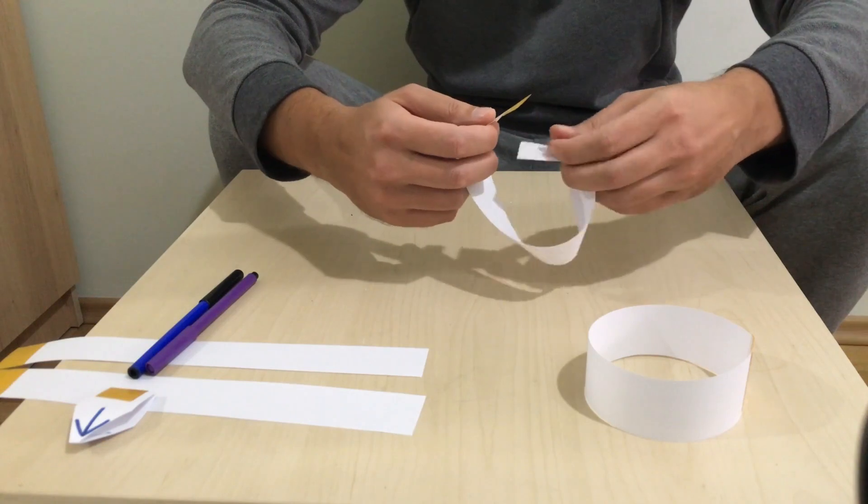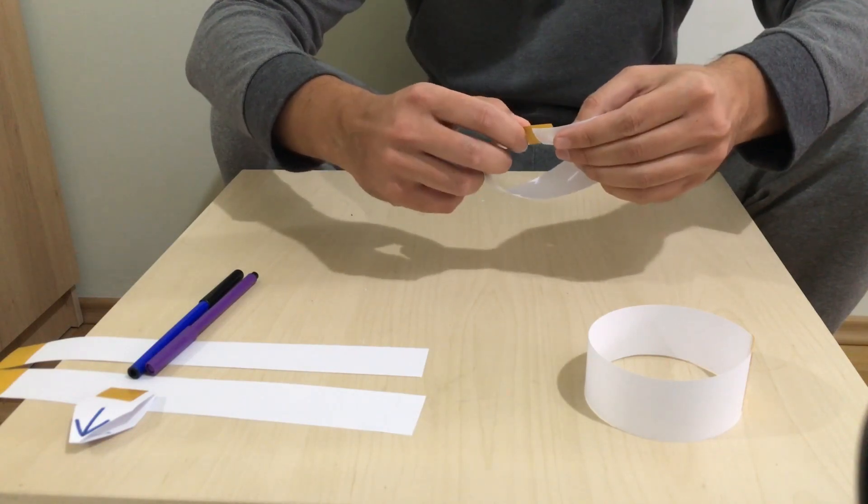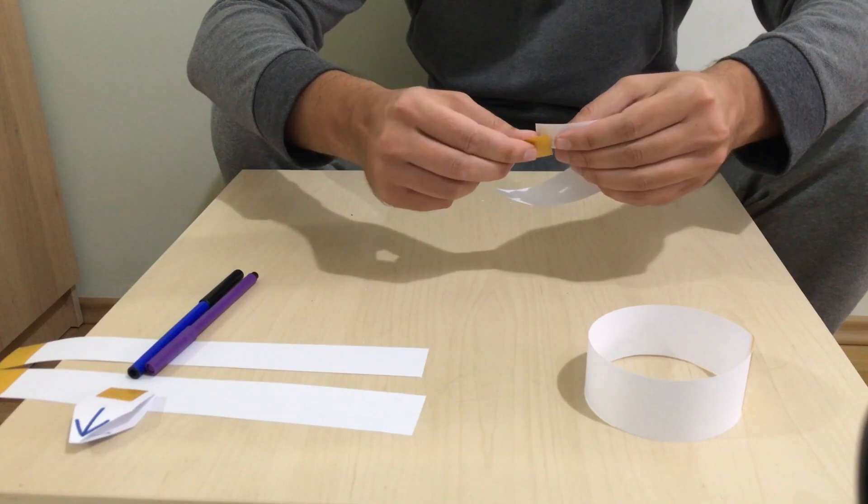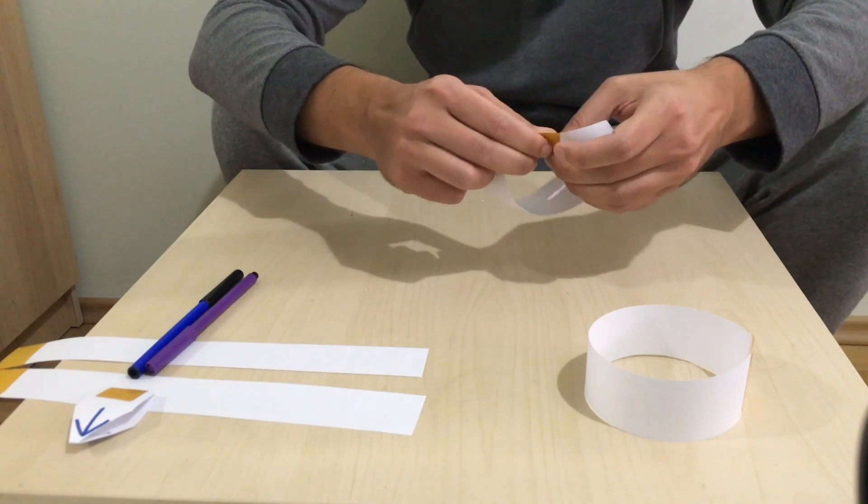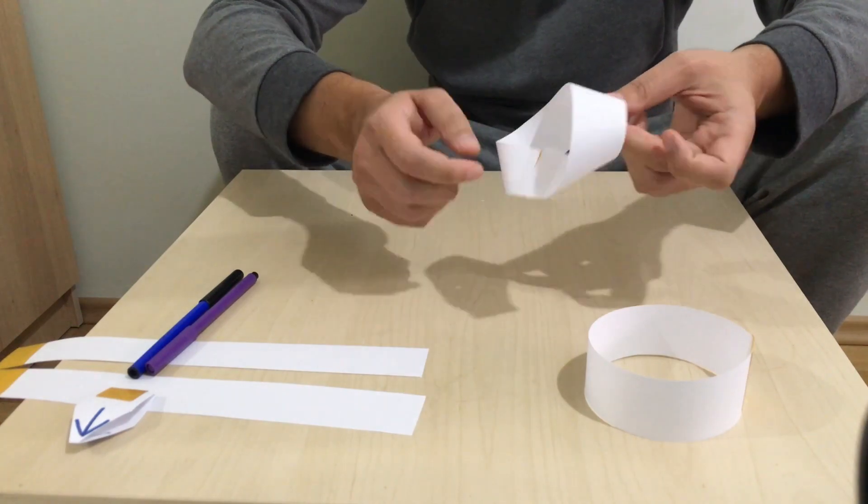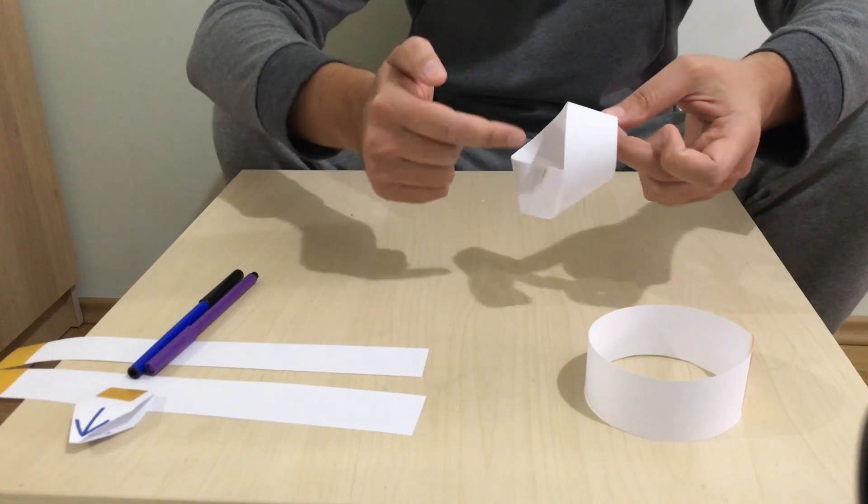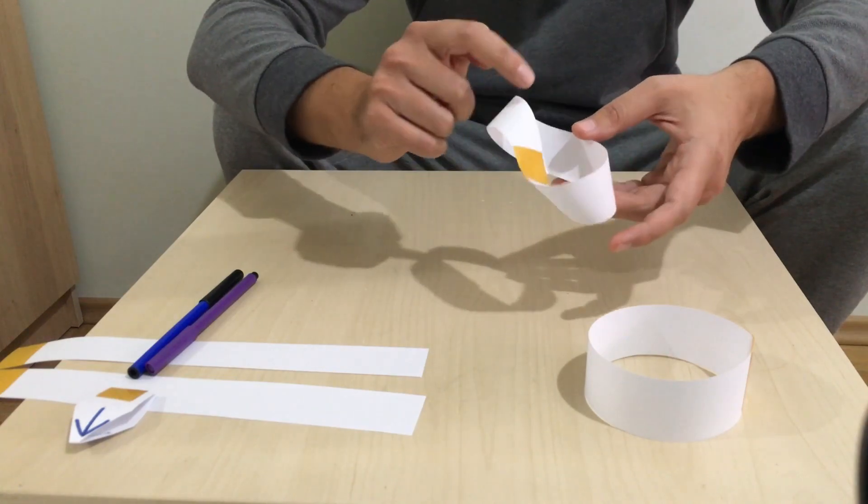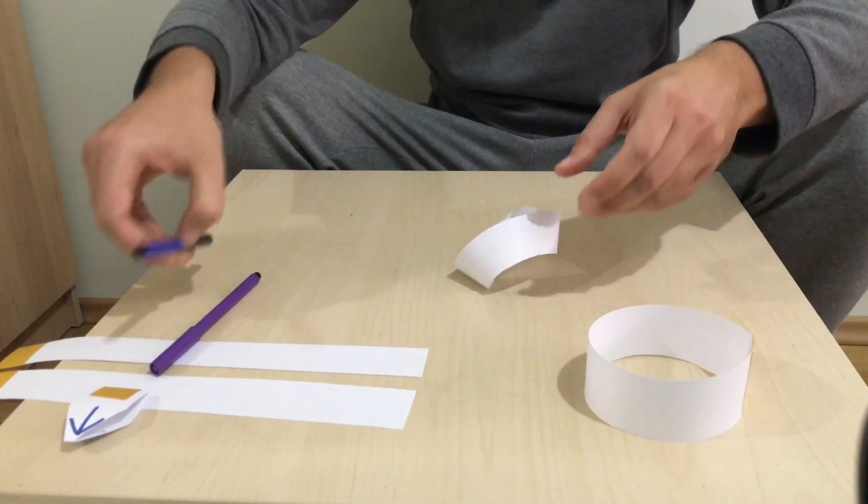Now I take another stripe but I don't make a cylinder this time. I take the edge, twist it, and then glue it with the tape. I have a new figure which is called a Möbius stripe, and it's a figure with only one surface and only one edge.